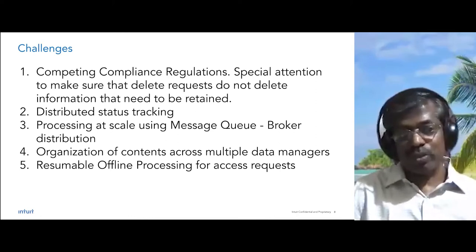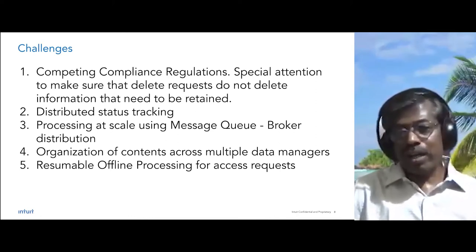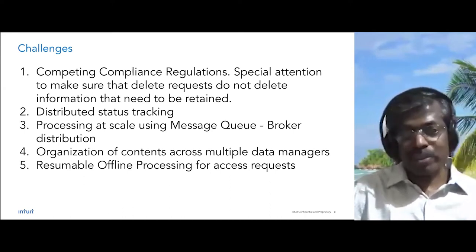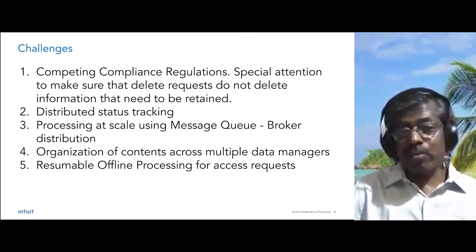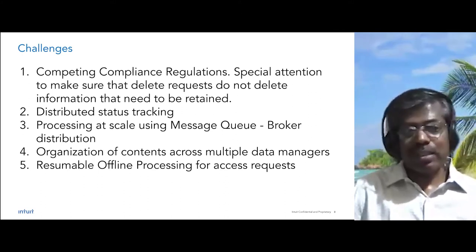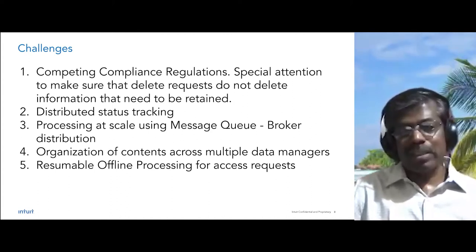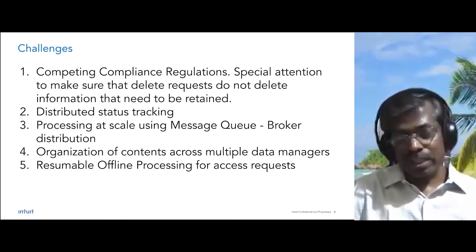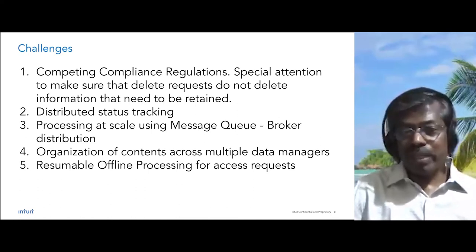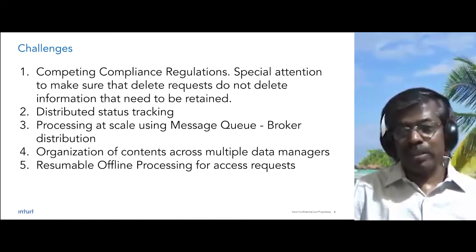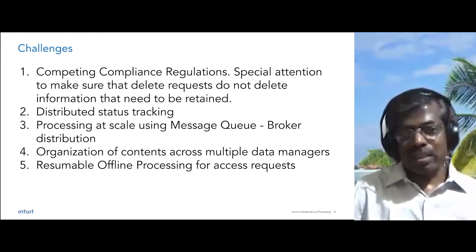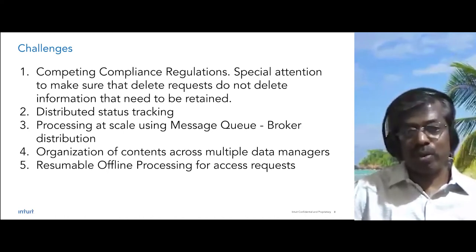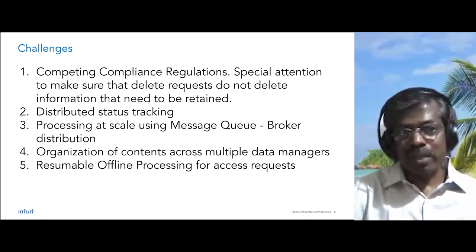The fourth challenge is how to organize content from different data managers so that we provide usable information to the customer. The fifth is resumable offline processing. With a large number of data managers providing information to be processed offline into a single archive, any intermittent network or infrastructure problem must not require restarting from scratch — processing must be resumable from where it left off.